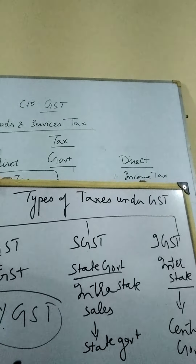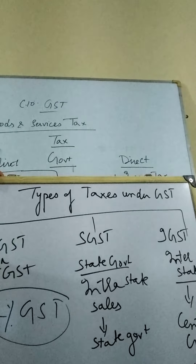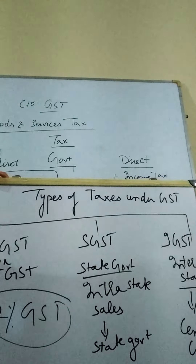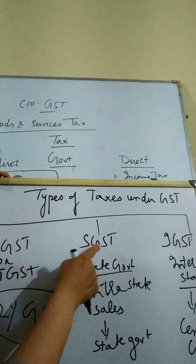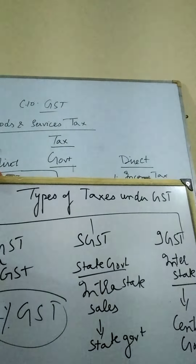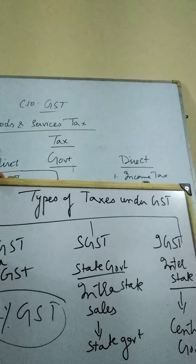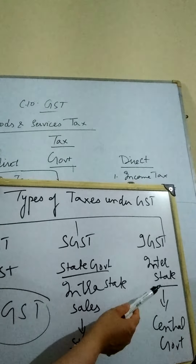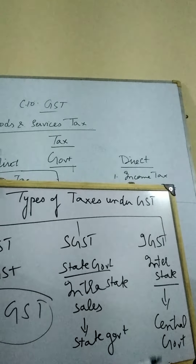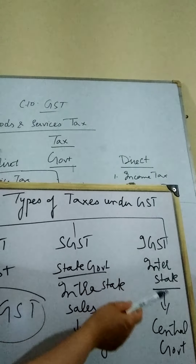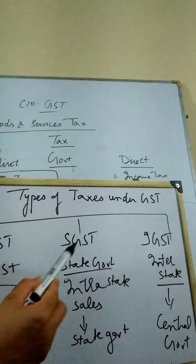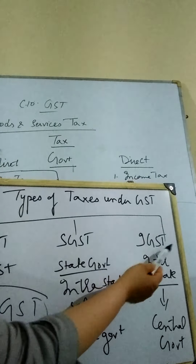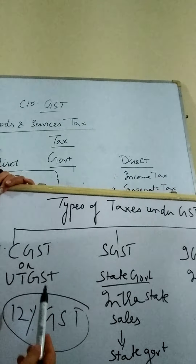Intrastate means: suppose we are living in Uttarakhand and purchasing a commodity from Dehradun and selling it to Saharanpur — then SGST will be levied. Taxes levied on goods sold within the same state are SGST. We also have another concept which is IGST. IGST means interstate sale — whenever a commodity is sold from one state to another state, for example from Uttarakhand to Delhi, which are two different states, we levy IGST.